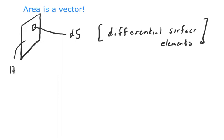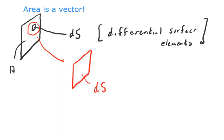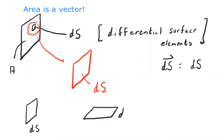Let's blow up this picture. Here is dS. I claim — it sounds bold — but area is a vector. The differential surface element is an area, and I claim it's a vector. That means it has to have magnitude — that's clear, so many square meters — but it also has to have a direction. That's intuitively clear: this differential surface element is different from that one, which is different from another one.